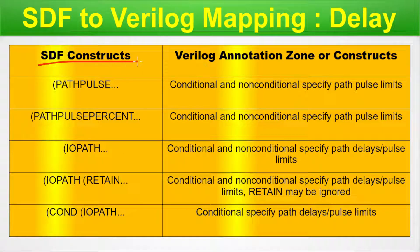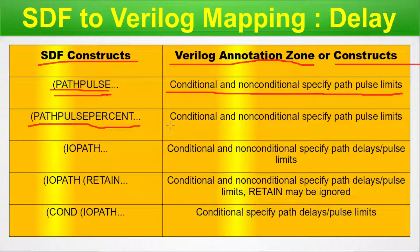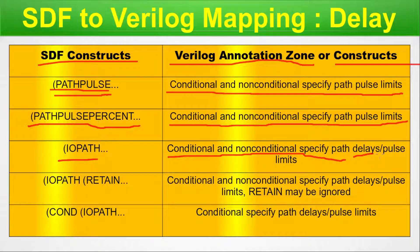Here we present the SDF to Verilog mapping table for delay components. On the left side we have SDF constructs; on the right side we have the Verilog annotation zone or construct. PATHPULSE maps to conditional and non-conditional specified path pulse limits. PATHPULSE% also maps to conditional and non-conditional specified path pulse limits. IOPATH maps to conditional and non-conditional specified path delay and pulse limits.